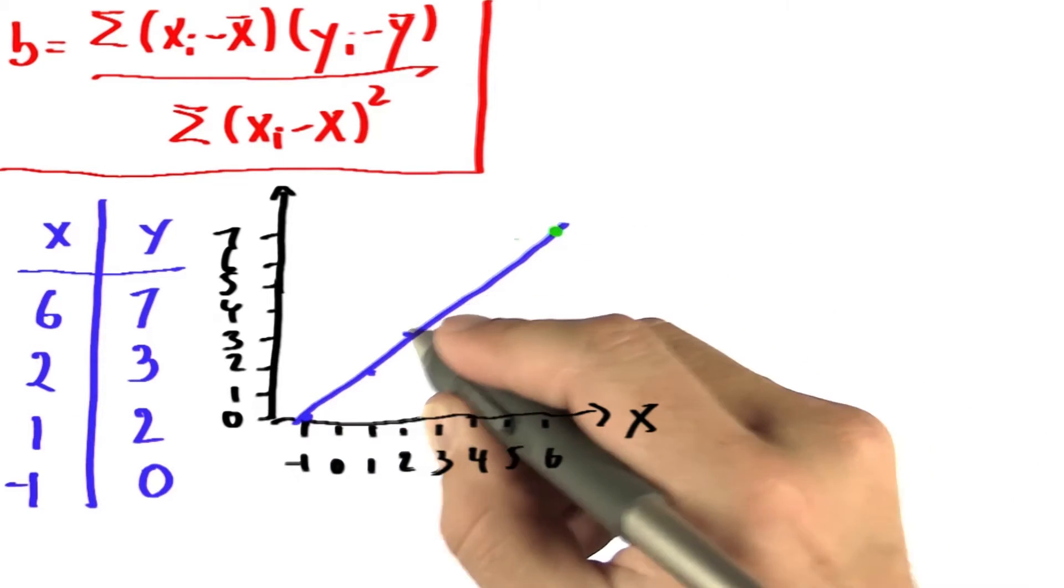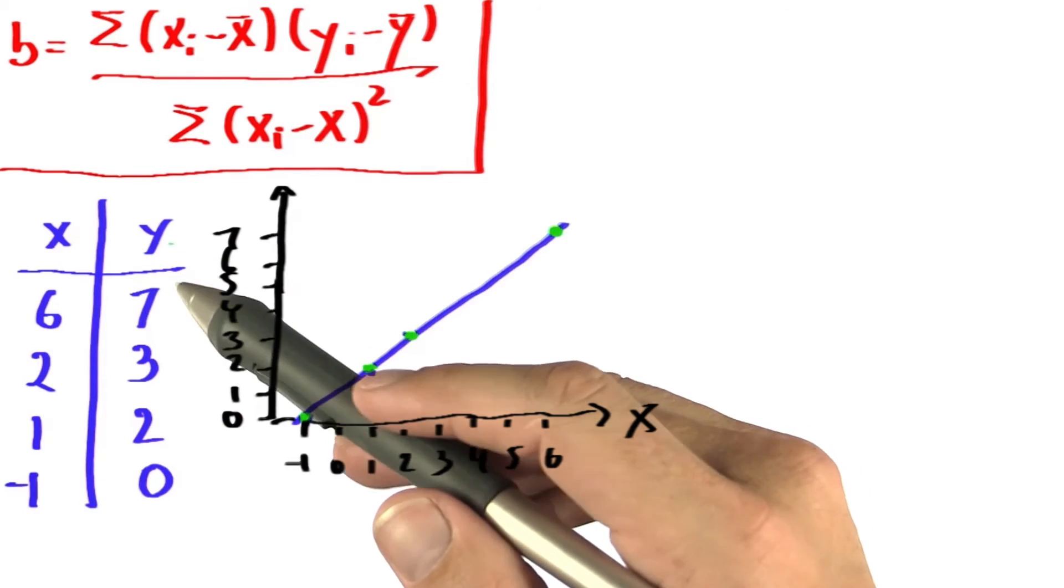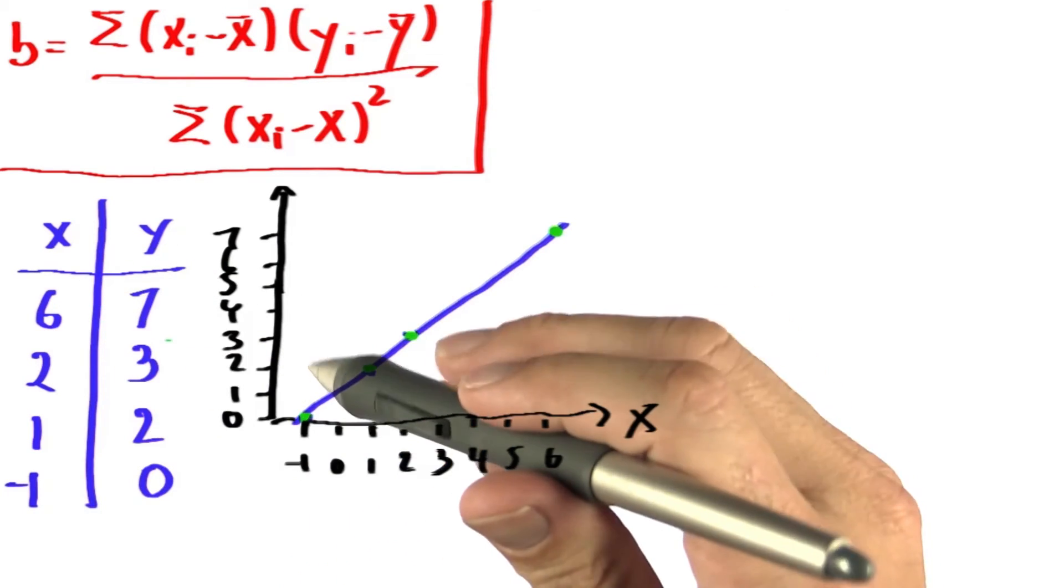Whatever non-linearity you see here, it's because of my poor drawing skills. And if you analyze carefully, you already saw that y is always just one larger than x.